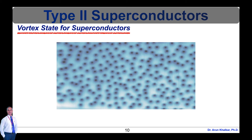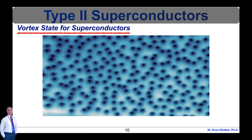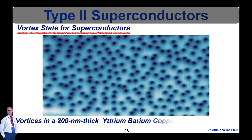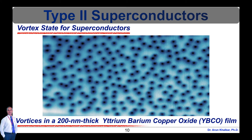Vortices in a 200 nm thick yttrium barium copper oxide film imaged by scanning SQUID microscopy. Scanning SQUID (superconducting quantum interference device) microscopy is a technique where a superconducting quantum interference device is used to image surface magnetic field strength with micrometer scale resolution.